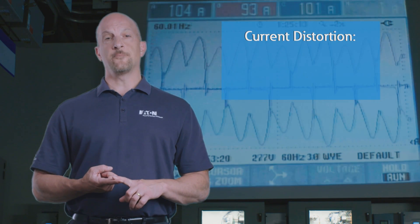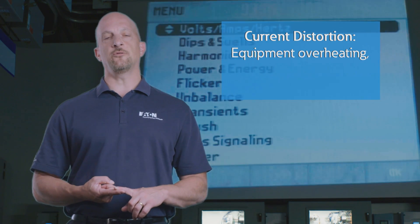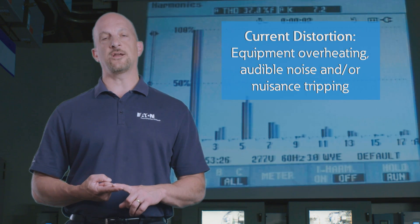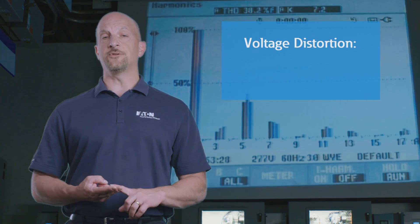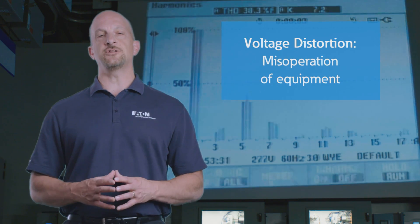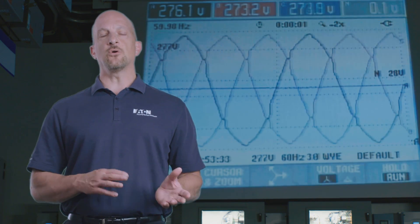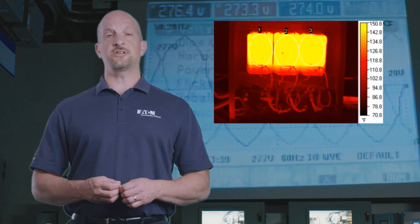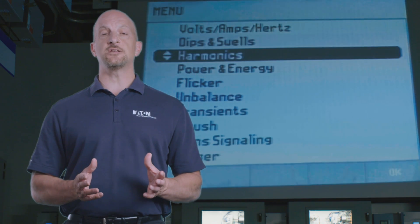Harmonics can create two fundamental issues. Current distortion, which has the symptoms of equipment overheating, audible noise, and nuisance tripping of protective devices. The second issue is voltage distortion, which typically causes misoperation in equipment. Either or both problems can cost you money with damage or misoperation to your equipment. But every system is different and careful analysis must be made, or you could significantly overspend on a perceived problem that may or may not exist.